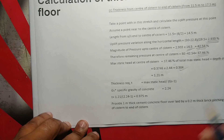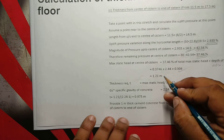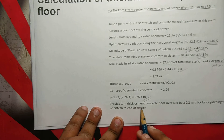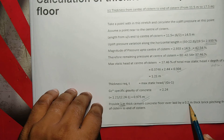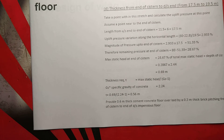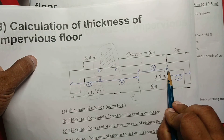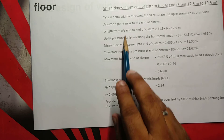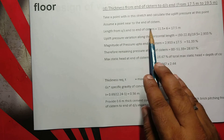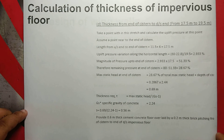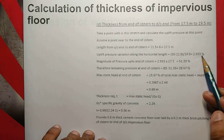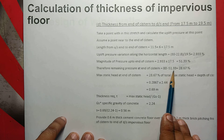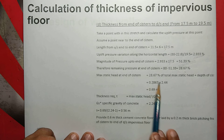So this is the maximum head; 37% is the magnitude at the center of system. The depth of system is 1.21 meter. The length from upstream end to end of system is 11.5 plus 6, which is equal to 17.5 meter. The horizontal length pressure is 2.93 and the total magnitude is 51.33. Therefore the remaining pressure at the end of system is 90 minus 51.33, which is equal to 28.67.